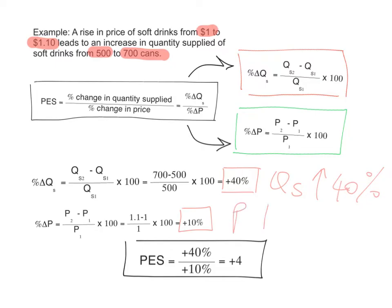The price has risen by 10%. Dividing plus 40% by plus 10% gives us plus 4. This means that for every 1% change in price, quantity supplied responds by 4%. So if price rises by 1%, quantity supplied will rise by 4%; if price falls by 1%, quantity supplied will fall by 4%.